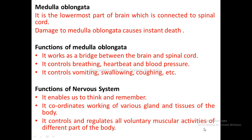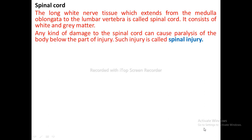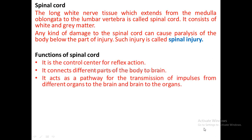Spinal Cord: The long white knob-like tissue which extends from the medulla oblongata to the lumbar vertebrae is called the spinal cord. It consists of white and gray matter. Any damage to the spinal cord can cause paralysis below the part of injury, which is called spinal injury. Functions: it is a control center for reflex action, connects different parts of the body to the brain, and acts as a pathway for transmission of impulses from organs to the brain and vice versa.